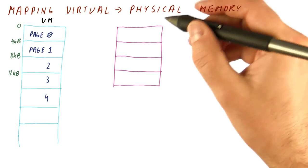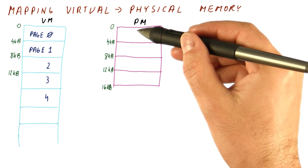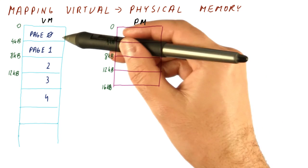So this is our virtual memory. Our physical memory is divided into slots that can hold pages, and these slots are called frames.